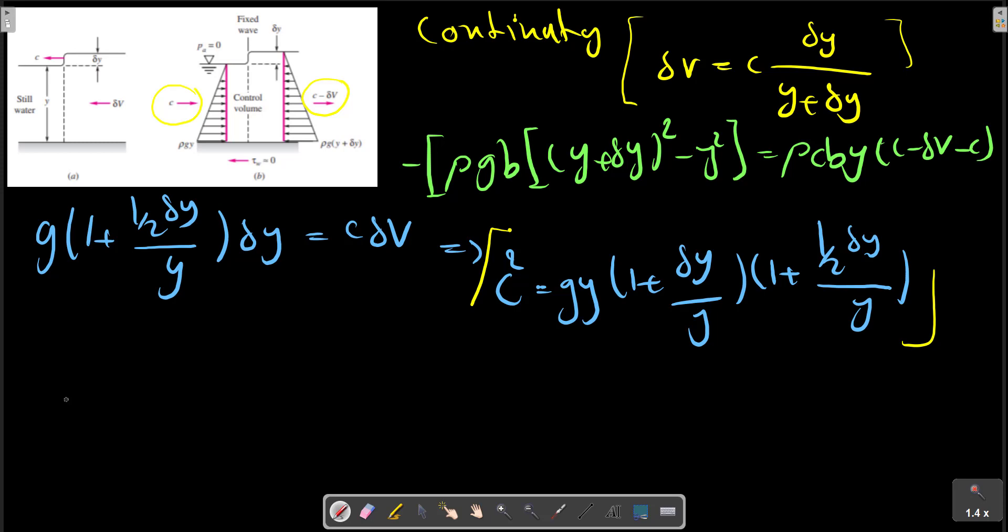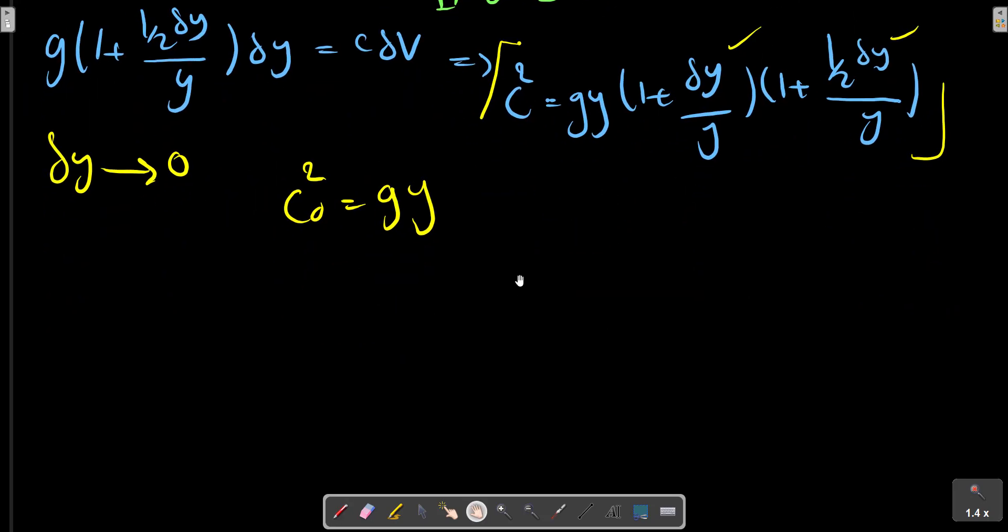In the limit of infinitesimal wave, when delta Y turns to zero, the speed becomes the square root of g Y. This is the surface wave equivalent of flow sound speed.